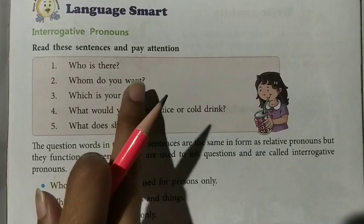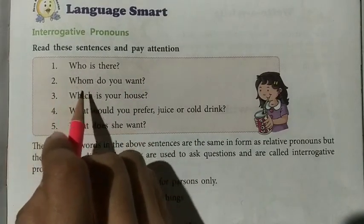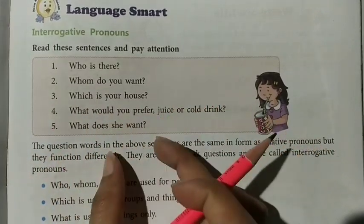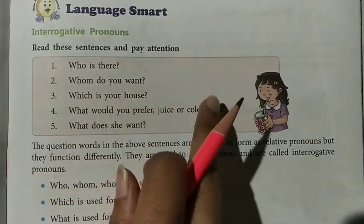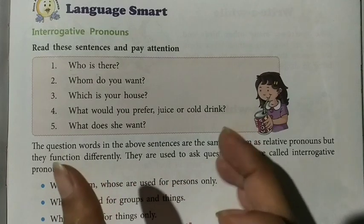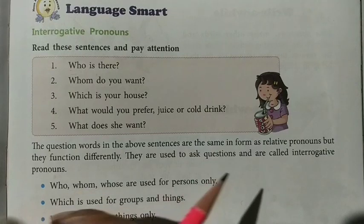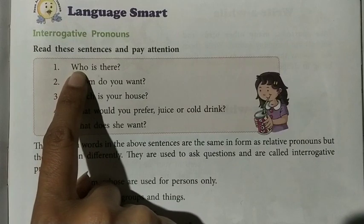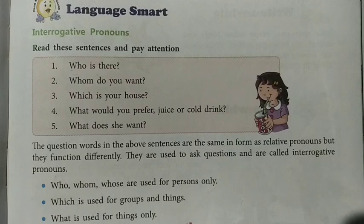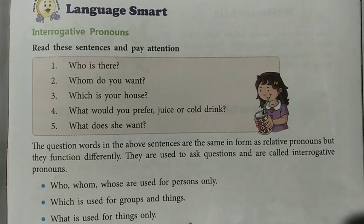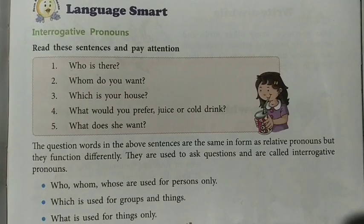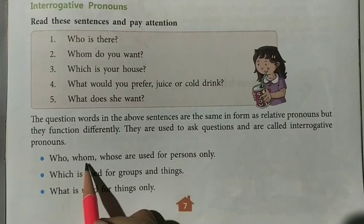Don't confuse interrogative and relative pronouns. In interrogative pronouns we ask questions ending with a question mark. Relative pronouns join two sentences — for example, 'The boy who is standing there is wearing a red cap' — here 'who' joins the two sentences, so it is a relative pronoun, not interrogative. In relative pronouns, a WH-word comes in the middle with a full stop at the end.